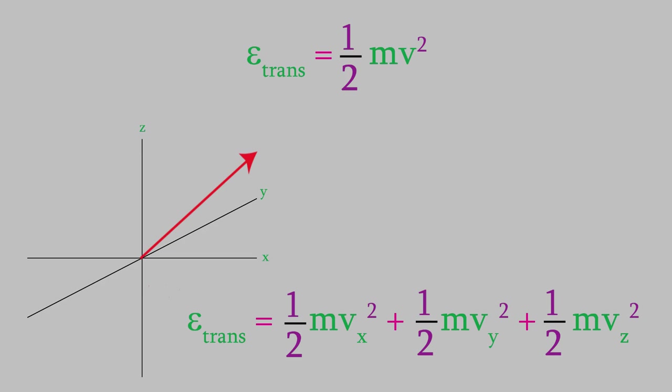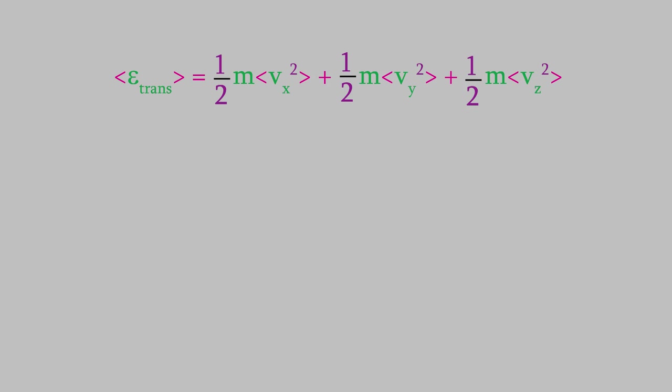Now, we're dealing with a system that's an ensemble of molecules, which means it consists of an extremely large number of molecules on the order of Avogadro's number. That means we should look at the average translational energy and the average velocities in the x, y, and z directions.